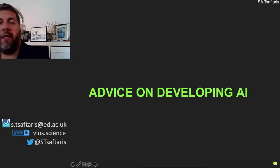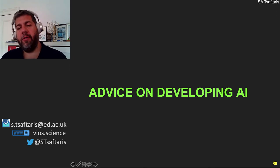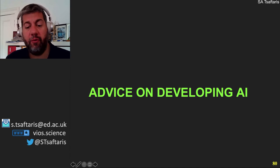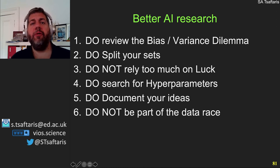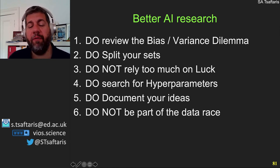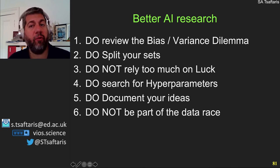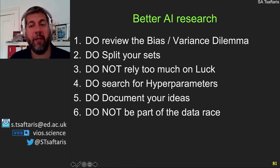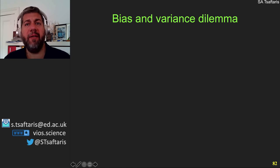In the last phase, I'll talk about developing AI in general — some examples and lessons I've learned to do better AI research. These are six lessons. First is to review the bias-variance dilemma — what it means to overfit versus underfit — and use this to inform how you split your datasets.